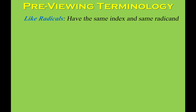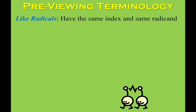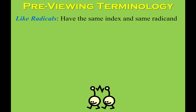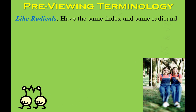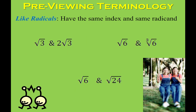In order to add and subtract with radicals, I tell students that it's just like adding and subtracting with variables — you have to have like terms in order to add or subtract them together. So what does it mean to be a like radical? A like radical means it has to have the same index and the same radicand.